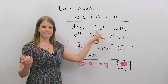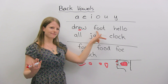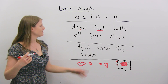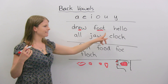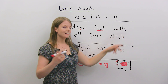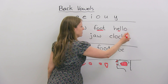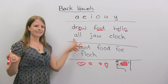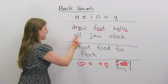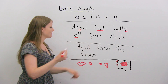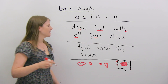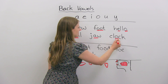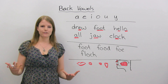We have the word "foot". So what's the vowel? In this case, it's the O's, and F and T are consonants. "Hello" — the E is a vowel, and so is the O. "All" — in this case the A is the vowel. "Jaw", and "clock". So these are the different vowels in English.